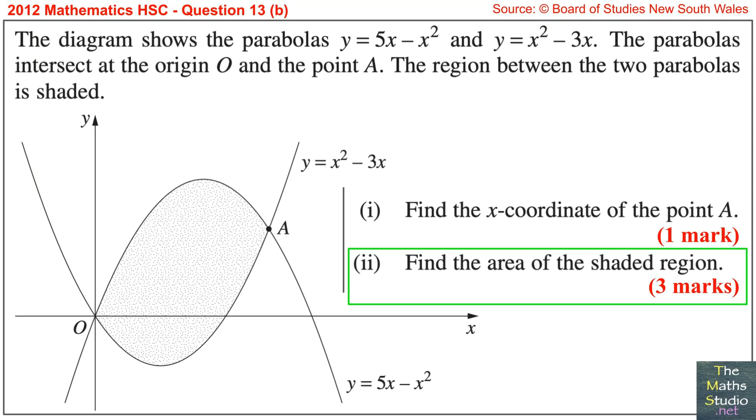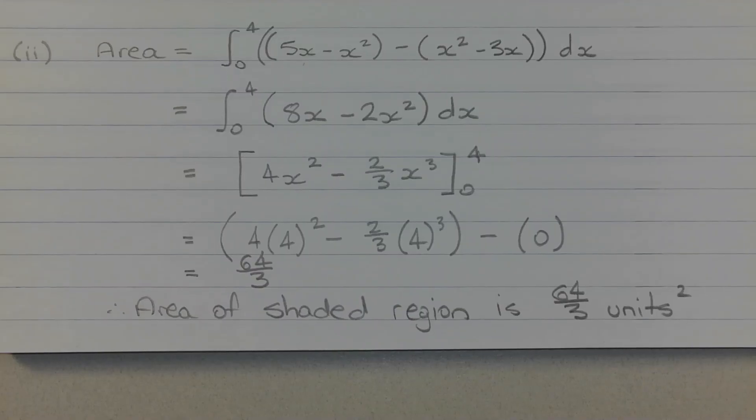Part 2: Find the area of the shaded region. The parabola 5x minus x squared is above the concave up parabola x squared minus 3x between the points of intersection where x equals 0 and x equals 4.